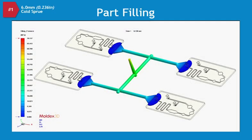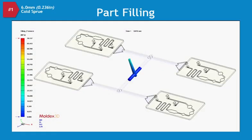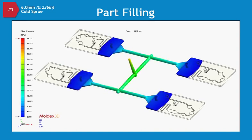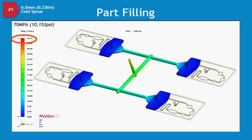Let's start by watching the filling animation for this part. There are no fill-related issues, and the injection pressure required to fill the part is about 70 MPa, which is well within the molding machine's capabilities.